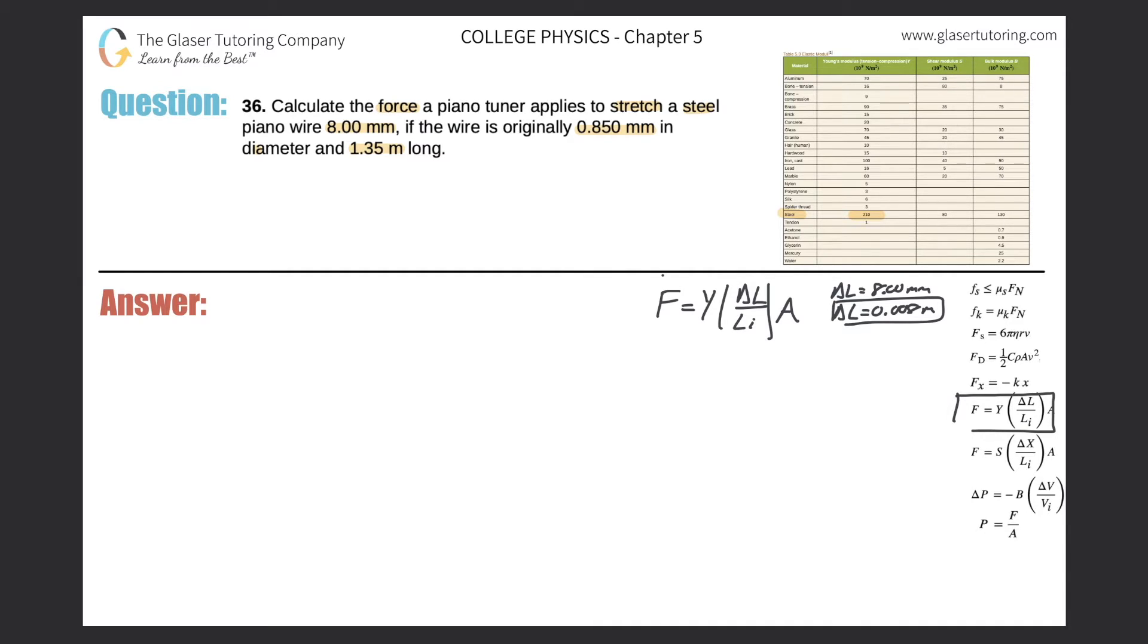Do they tell us the initial length of the wire? Yes, they do. It's 1.35 meters. So I do know this. That's great. And the last piece I just need to calculate is A. And what do they tell me? Well, it's a piano wire and it has a diameter of 0.850 millimeters.